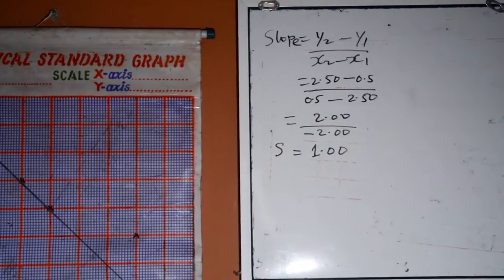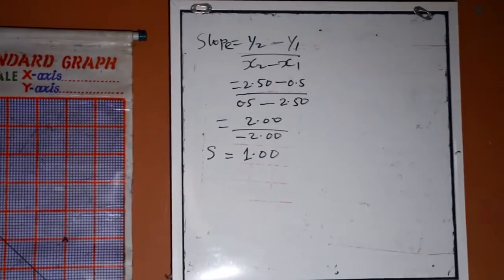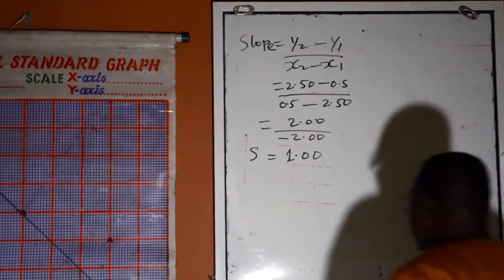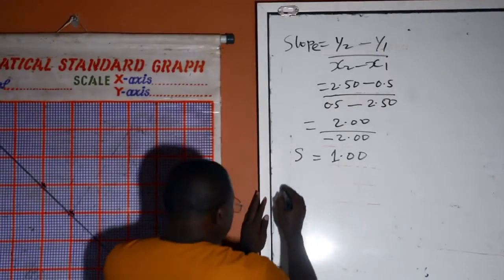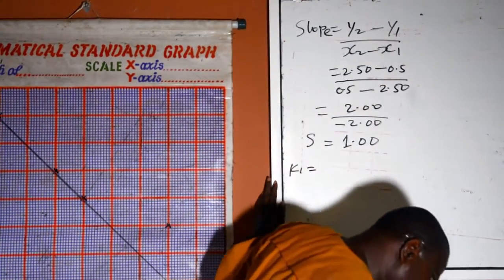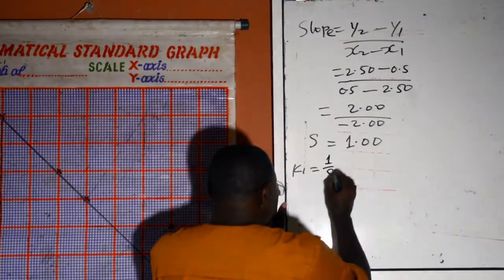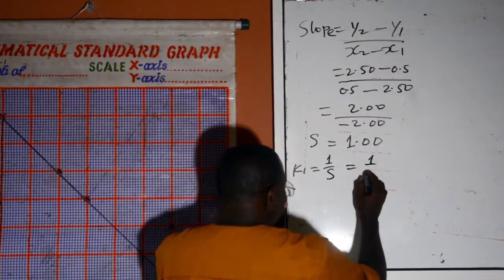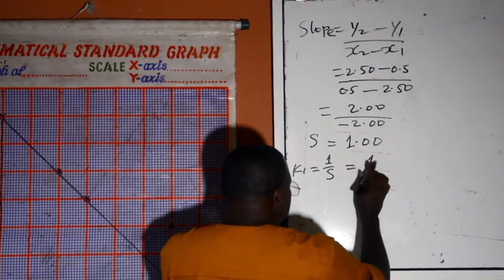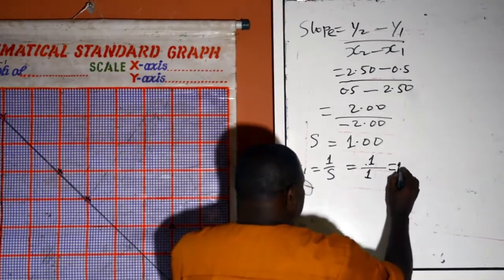Now, precaution. We are directed to calculate K1. K1 is equal to 1 over slope. 1 divided by 1 is equal to 1.00.